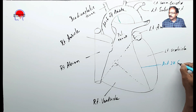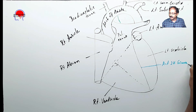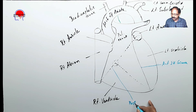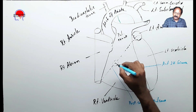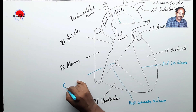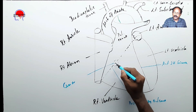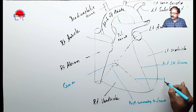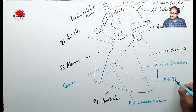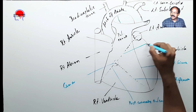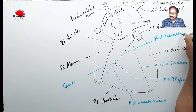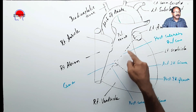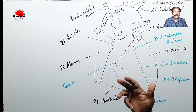Here are the grooves: this is the anterior interventricular groove, this is the posterior coronary sulcus, and this is the crux where the posterior coronary sulcus and the posterior interventricular groove meet — a very important landmark of the heart. Whatever I have drawn with a dotted line comes behind the heart and cannot be seen from the anterior aspect. That is all about the outline of the heart.